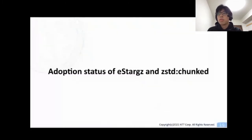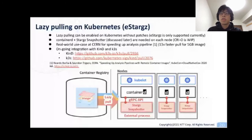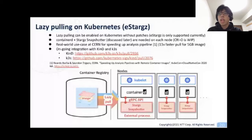From this section, I'm going to introduce support and adoption status of lazy pulling in the community. First, lazy pulling by eStargz can be used on Kubernetes. Currently zstd-chunked is not supported, but we are working on it. ContainerD supports lazy pulling of eStargz, so lazy pulling can be enabled by using ContainerD as CRI runtime. We are also working on enabling lazy pulling on CRI-O. The Stargz Snapshot plugin of ContainerD needs to run as a daemon on each node, and ContainerD needs to be configured to recognize the Stargz Snapshot through a unique socket. There is a real-world use case of eStargz on Kubernetes at CERN for speeding up analysis pipelines — 13x faster pull for a five-gigabyte image is reported.